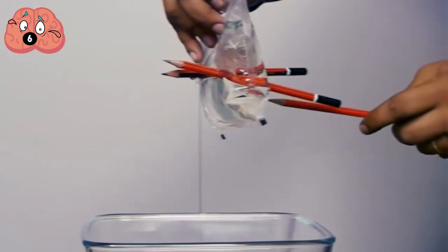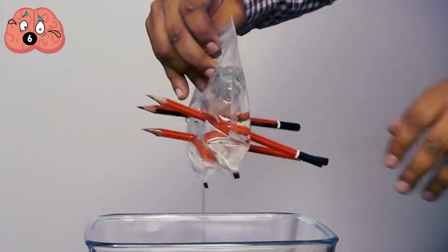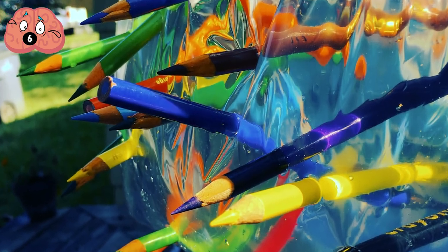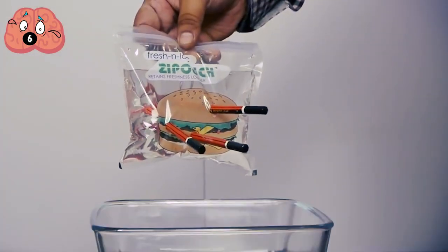The reason for this is because the plastic is made of polymers, which allows it to change shape. When you poke through it, the molecules hug the pencil, creating a watertight seal, which prevented it from leaking.